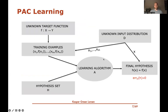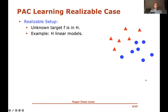So the setup is: an unknown distribution D generates samples x₁ through xₘ from the input domain. The training examples are these elements with their labels, fed into a learning algorithm. The algorithm finds a hypothesis h such that the chance h disagrees with the true label on a new element x drawn from D is close to zero.